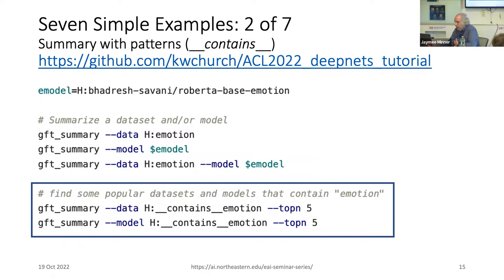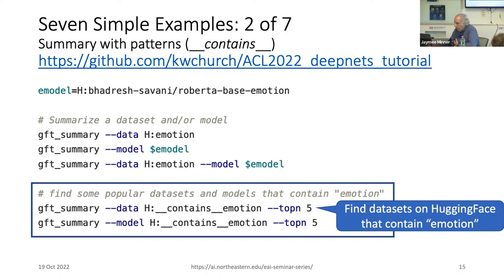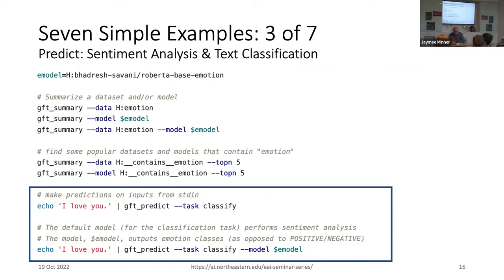Summary can tell you what's going on in a model or a dataset — it takes pretty much any argument and tells you what's going on. If you use the 'contains' argument, it can find things via search. For example, it would find the most popular datasets or models that contain the substring 'emotion.' From that, you can find the emotion model. This finds datasets on Hugging Face that have that substring, and also finds models that have that substring.